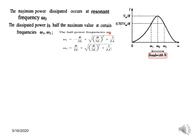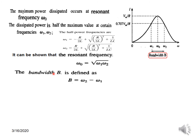The half-power frequencies can be calculated from: ω₁ = −R/2L + √((R/2L)² + 1/LC) and ω₂ = R/2L + √((R/2L)² + 1/LC). It can be shown that ω₀ = √(ω₁·ω₂), which is the geometric mean. The bandwidth B is defined as ω₂ − ω₁, and the quality factor Q = ω₀/B.